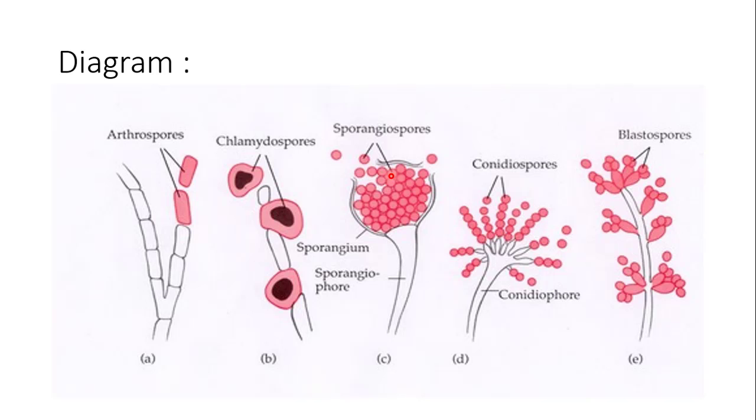These are the two basic forms of spores — endospores and exospores. With this we finish the introductory portion on spores. Stay tuned for the next part on bacterial spores, wherein we will cover the characteristics in detail, the structure of endospores, and the basic differences between vegetative cells and bacterial spores.